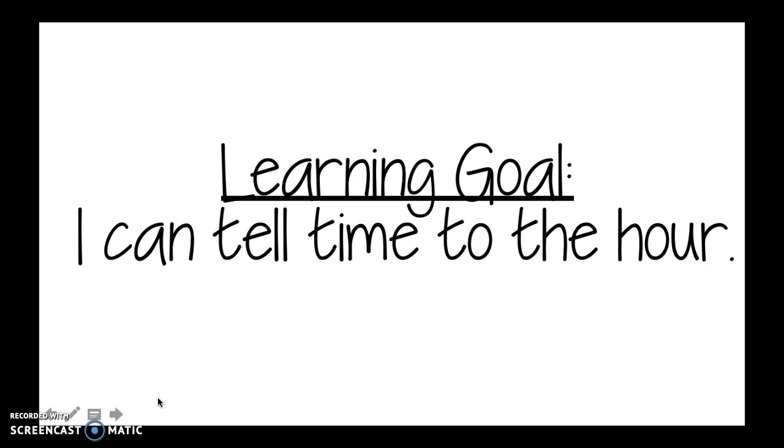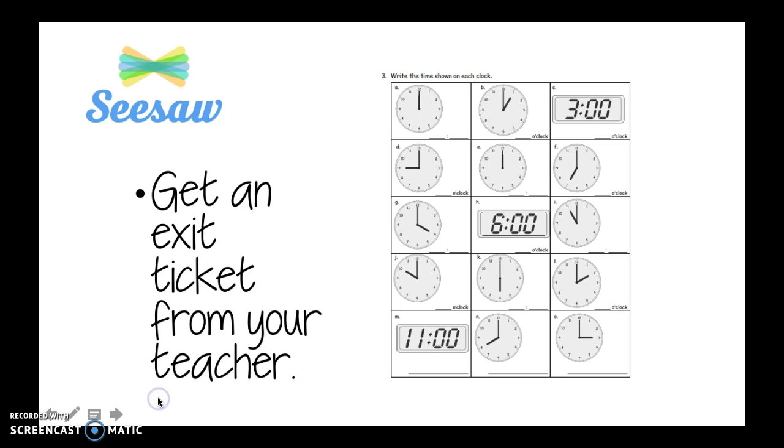Friend, our learning goal says I can tell time to the hour, and that's exactly what we've been doing. Now it's your turn. You're going to get this exit ticket from your teacher, and you're going to go ahead and fill it out. You're going to practice telling the time with the dots, and then also writing it with o'clock. Look at the clock, either one with the numbers that go around in a circle, which is called the analog clock, or look at the one that looks kind of like the one on our iPad, which is called a digital clock. Good luck, friend.